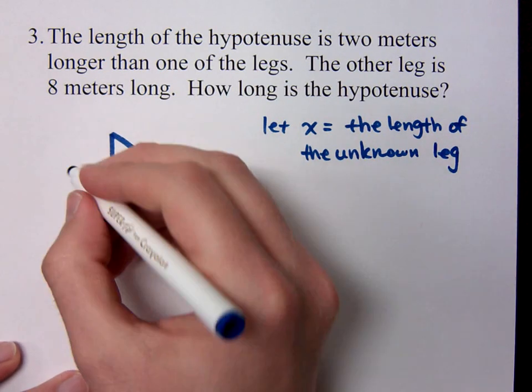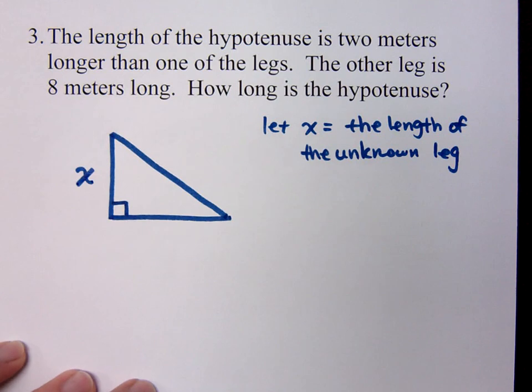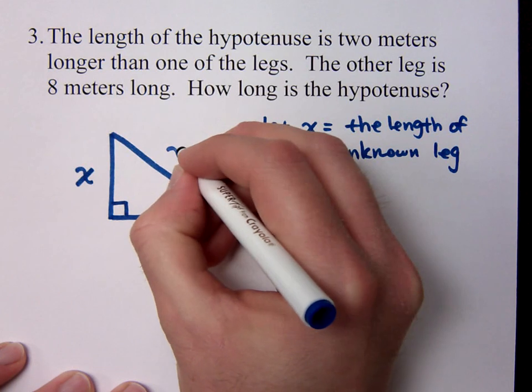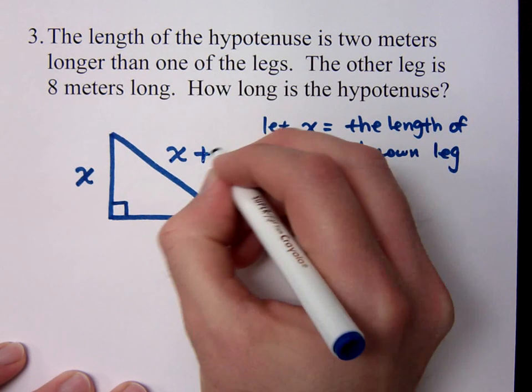So that means this is x, and how is the hypotenuse connected to that? How do we write 2 meters longer than that? That's twice. That's not 2 more than. If I say you get paid $2 more than me, that doesn't mean you get paid twice as much as me. It would be better for us to say x plus 2.